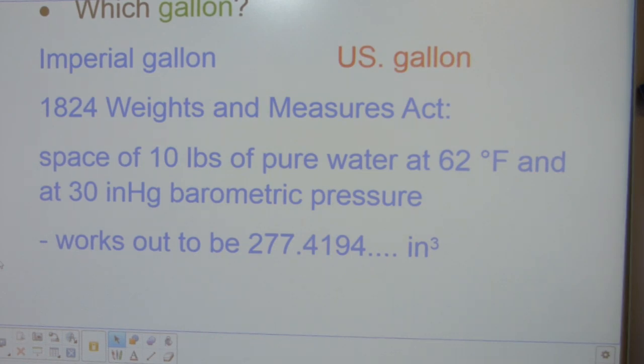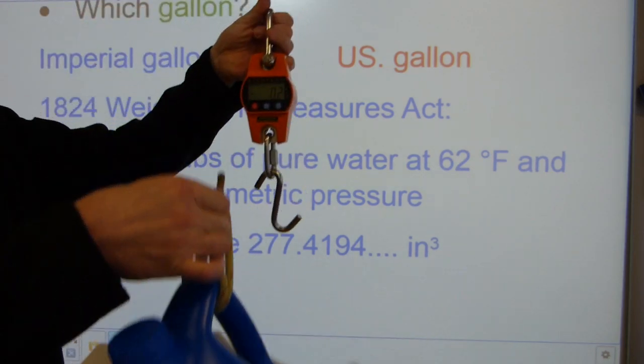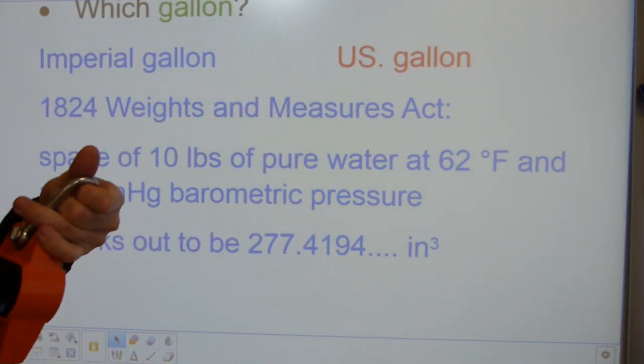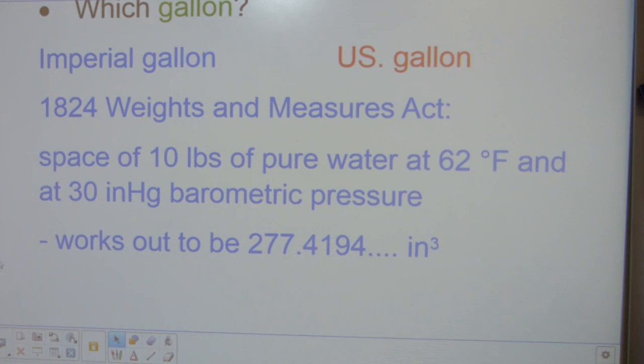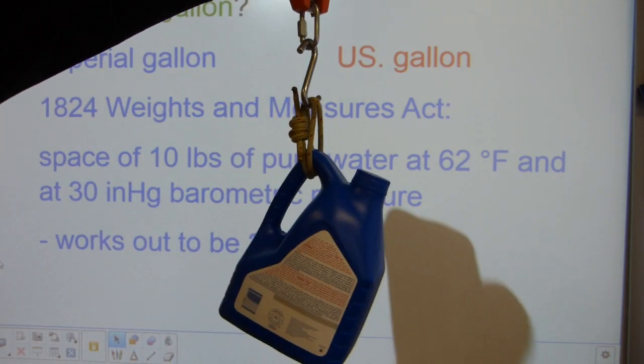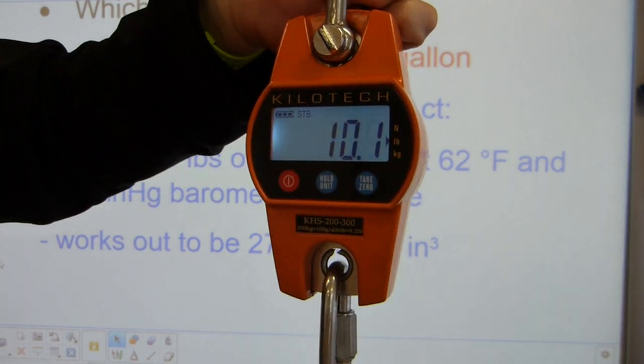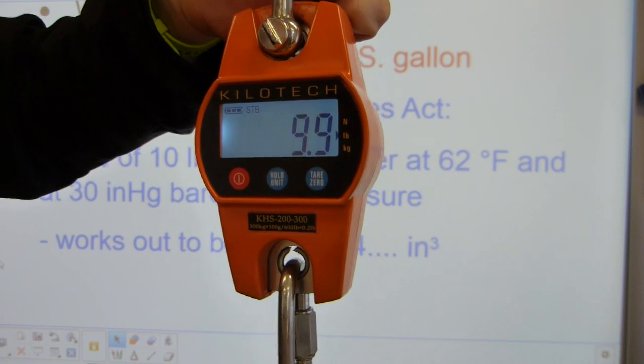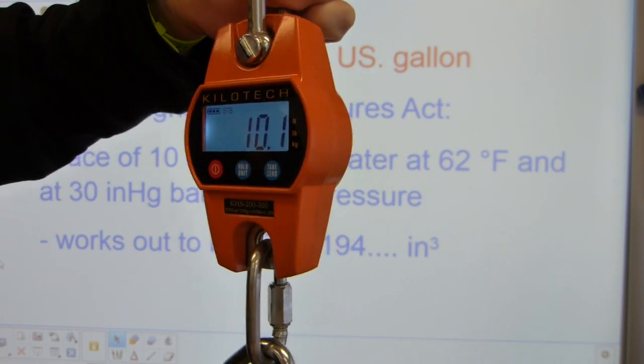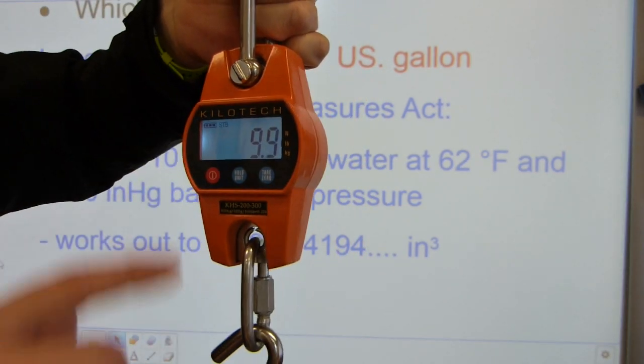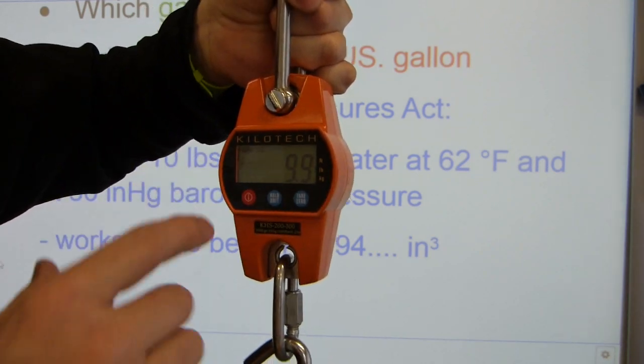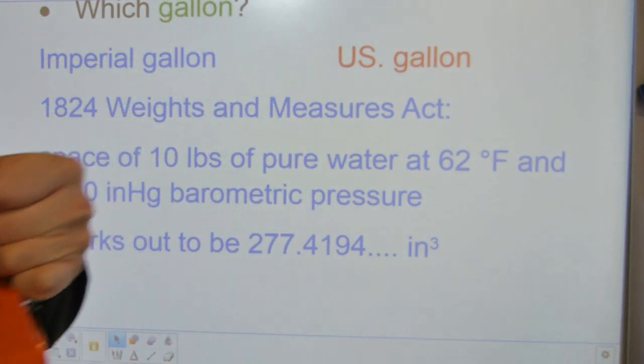If I do the same trick with the scale and the hook, it's gonna be 10 pounds. They're hanging together like so, and if it stops swinging you get it. It's 9.9 and 10.1, 10 pounds.